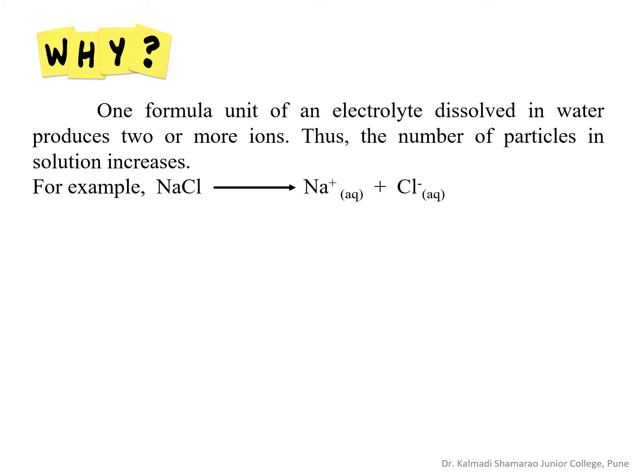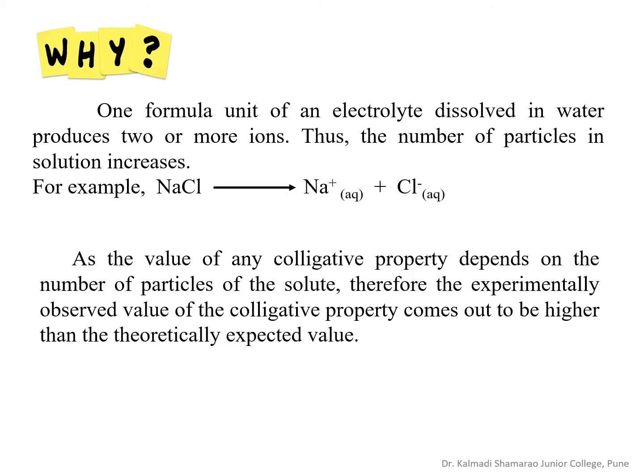For example, one molecule of NaCl in water dissociates to produce one Na⁺ and one Cl⁻ ion. Thus, two ions are produced from one molecule of NaCl. As the value of any colligative property depends on the number of particles of the solute, therefore the experimentally observed value of the colligative property comes out to be higher than the theoretically expected value.